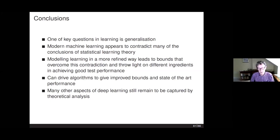The key question in learning is generalization, and modern machine learning appears to contradict many conclusions of statistical learning theory. But modeling learning in a more refined way leads to bounds that overcome this contradiction and throw light on different ingredients for achieving good test performance. They can drive algorithms that give improved bounds and state-of-the-art performance. Many other aspects of deep learning still remain to be captured theoretically — for example, domain shift, learning representations — but there is significant progress in this area.